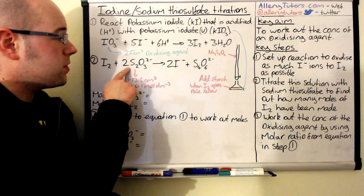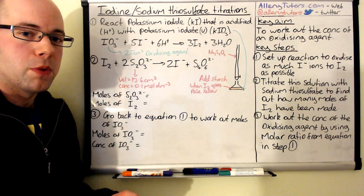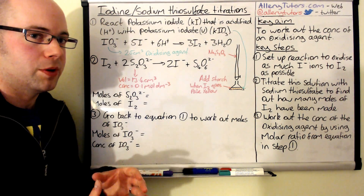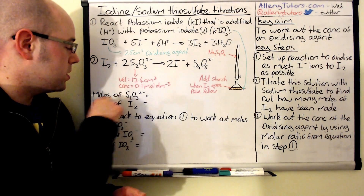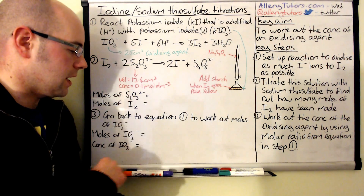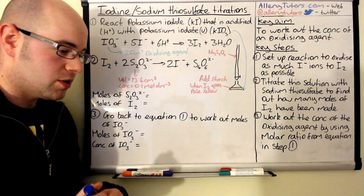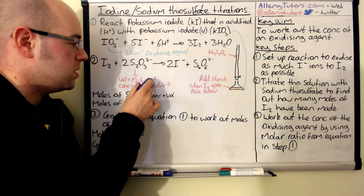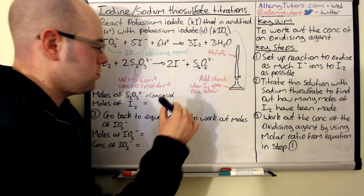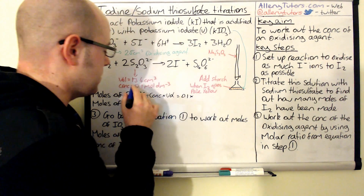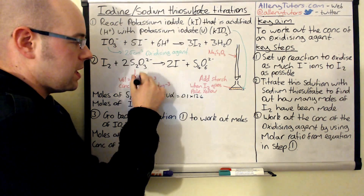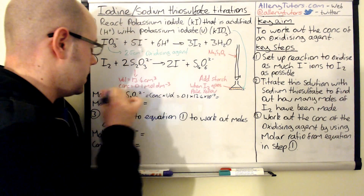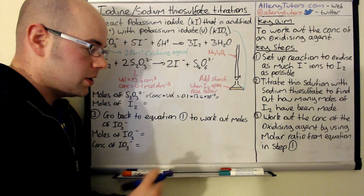We know the concentration of the thiosulfate — in this case 0.1 mol dm⁻³ — and the volume from the titration is 13.4 cm³. The moles of thiosulfate is concentration times volume, where volume must be in dm³, so: 0.1 × 13.4 × 10⁻³ = 1.34 × 10⁻³ moles of thiosulfate.